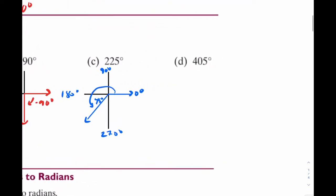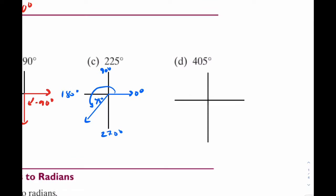The last one is 405. This one's interesting because it's clearly over 360. So if you think about this, it's going to rotate one full time, and then think about how much is left. If you do 405 minus 360, you get 45 degrees, which means this goes up 45 degrees more. And there's your answer.